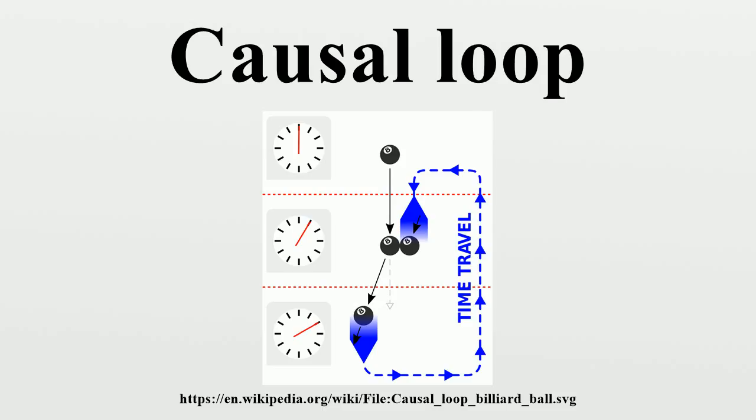Physicist Joseph Polchinski argued that one could avoid questions of free will by considering a potentially paradoxical situation involving a billiard ball sent back in time. In this scenario, the ball is fired into a wormhole at an angle such that, if it continues along that path, it will exit the wormhole in the past at just the right angle to collide with its earlier self, thereby knocking it off course and preventing it from entering the wormhole in the first place.